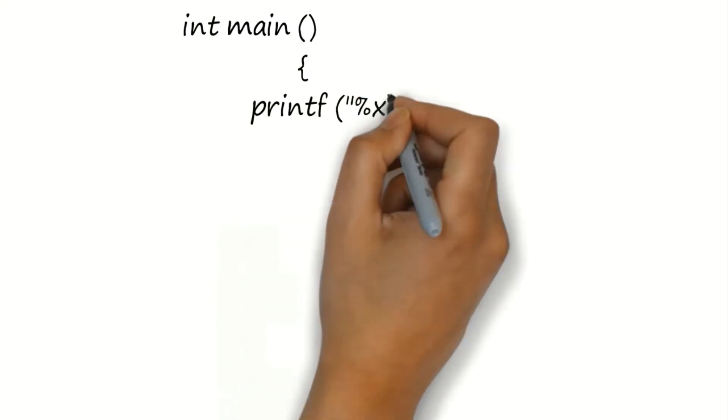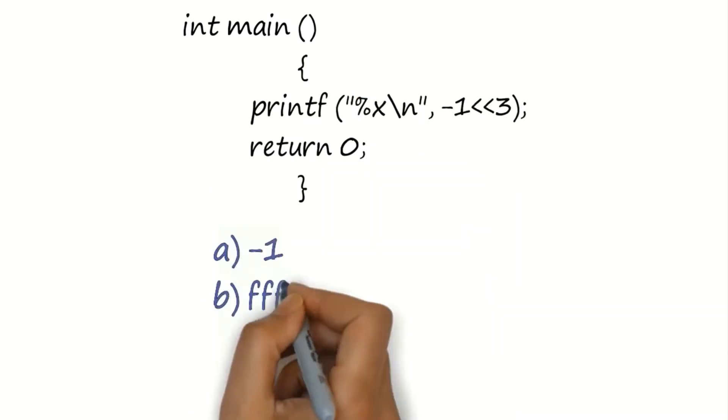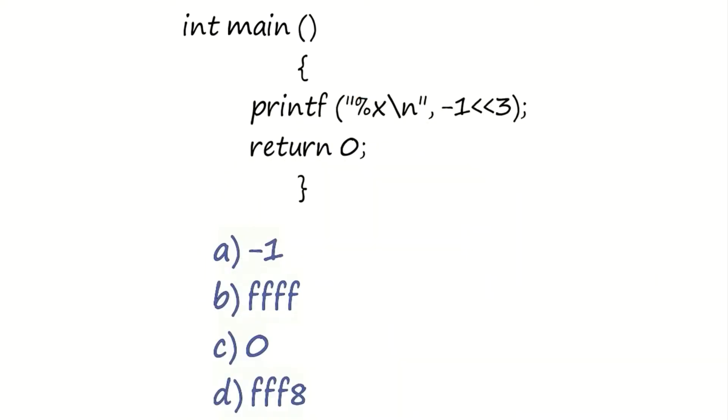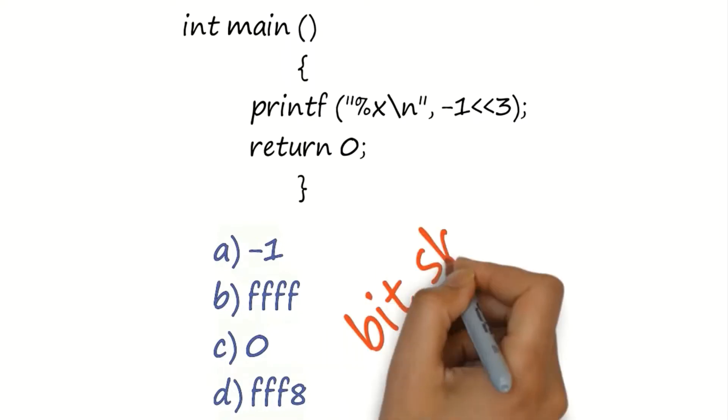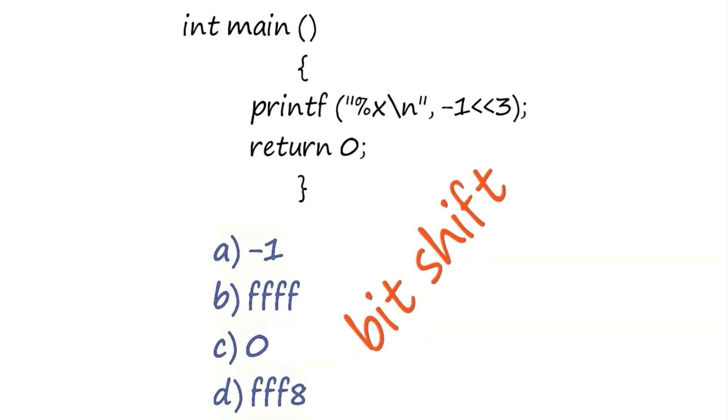Let's consider this problem. In order to solve this problem, we need to understand the concept of bit shift. A bit shift moves each digit in a number's binary representation left or right. There are three main types of shifts.